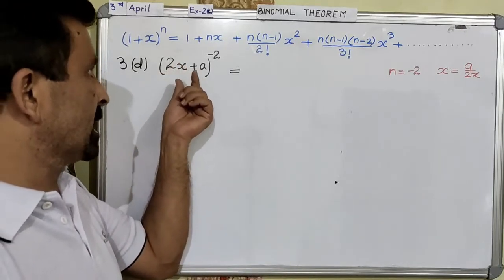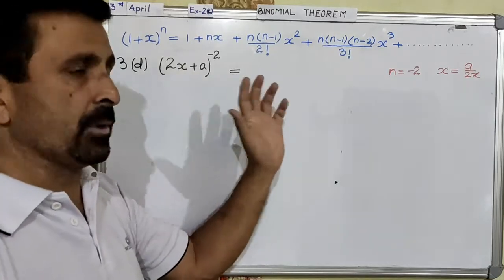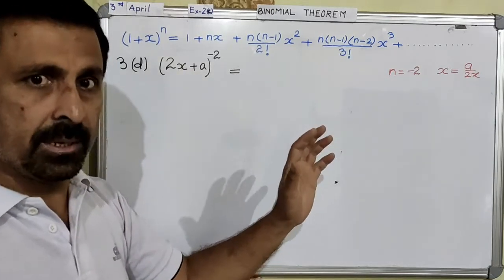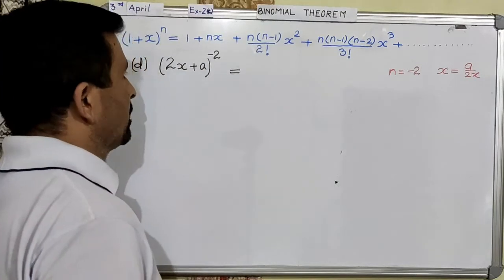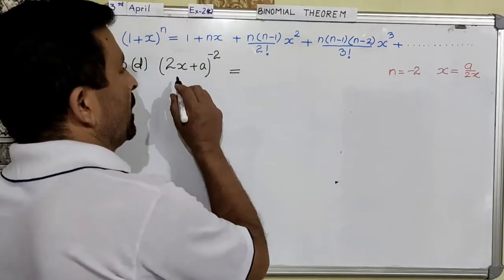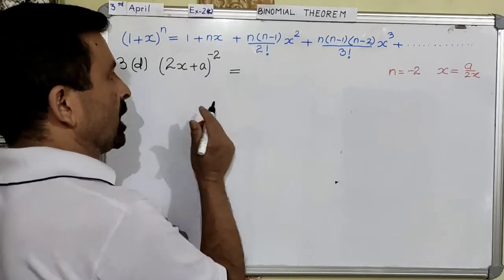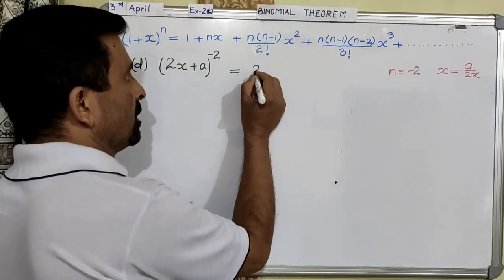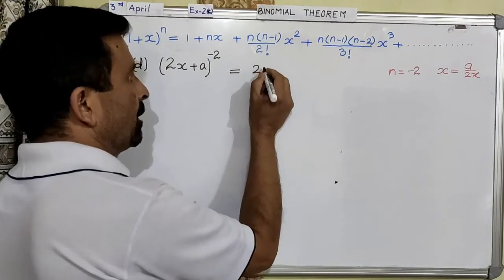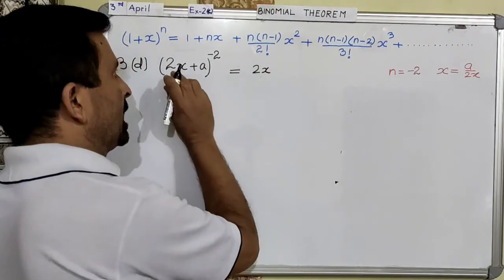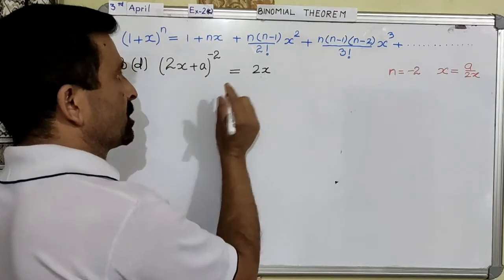Therefore, it is very necessary that you make the first term of this binomial as 1, and only then you can proceed. So we are going to modify the question — we will rectify it. We want this to be 1, therefore this has to come out. If you take out the first term of your binomial, only then this can be made into 1. This is the process — step number 1 is you take it out.